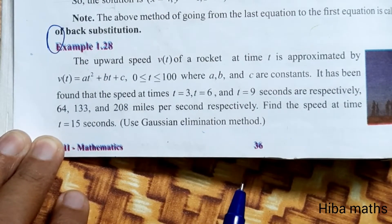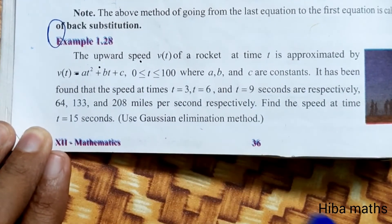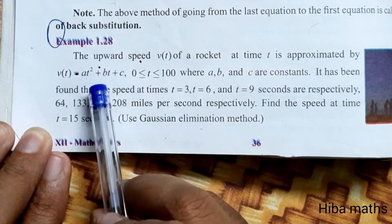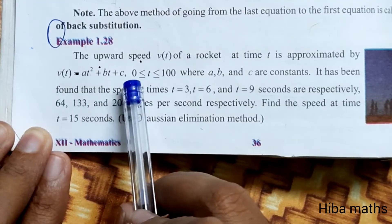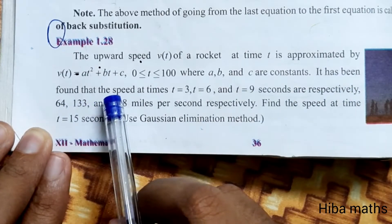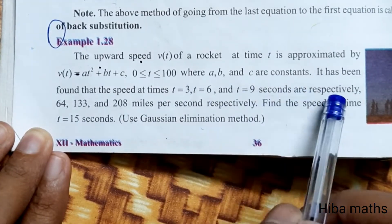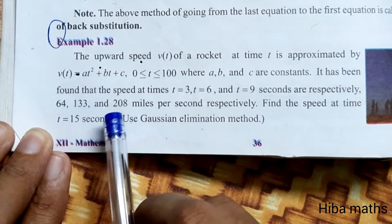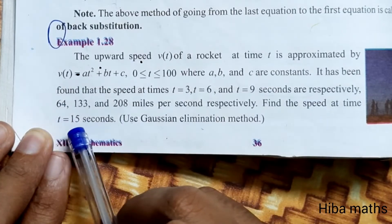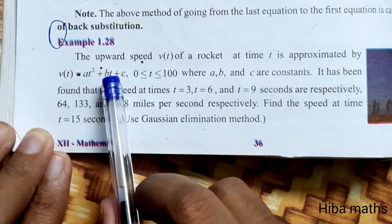Hello students, welcome to Hibamax 12th standard, Chapter 1, Example 1.28. The upward speed v(t) of a rocket at time t is approximated by v(t) = at² + bt + c, where 0 < t < 100 and a, b, c are constants. The speed at times t=3, t=6, t=9 seconds are respectively 64, 133, 208 miles per second. Find the speed at time t=15 seconds using Gaussian elimination method.